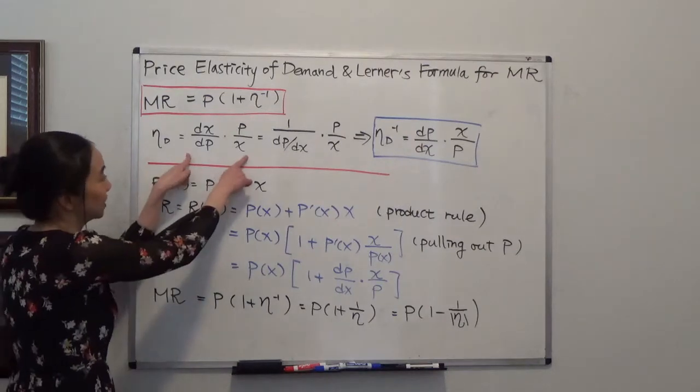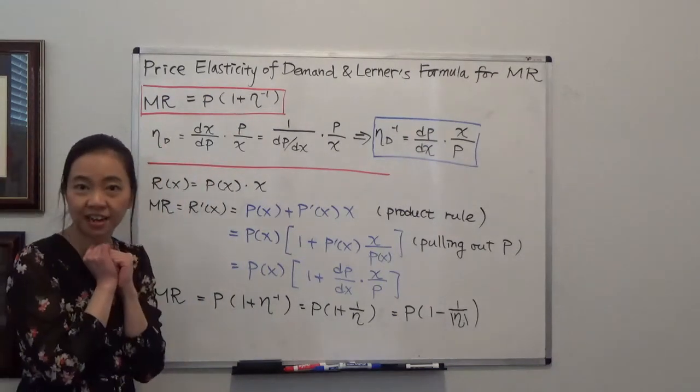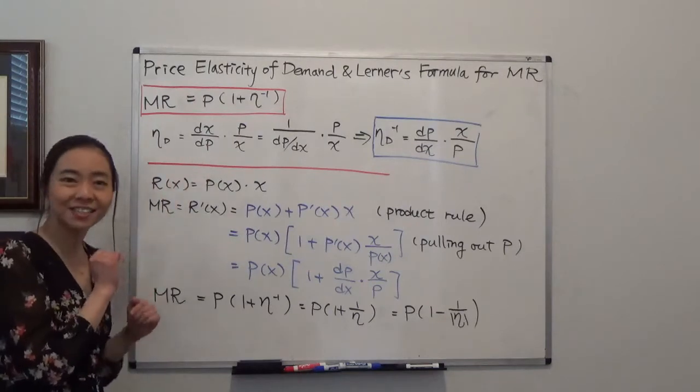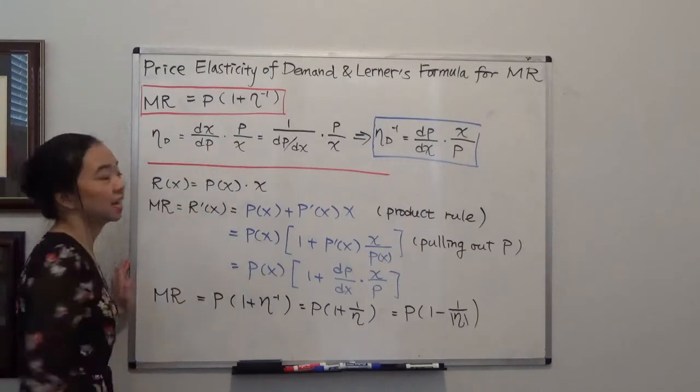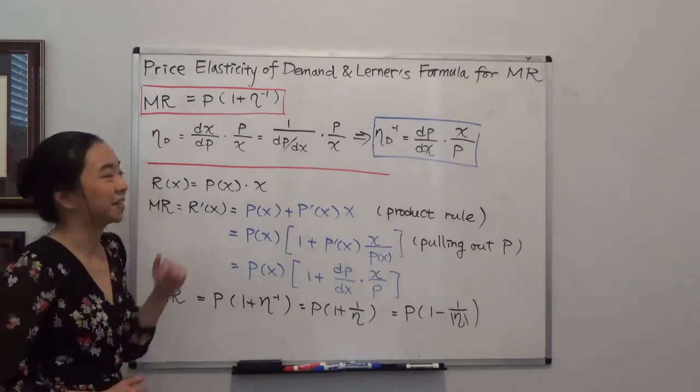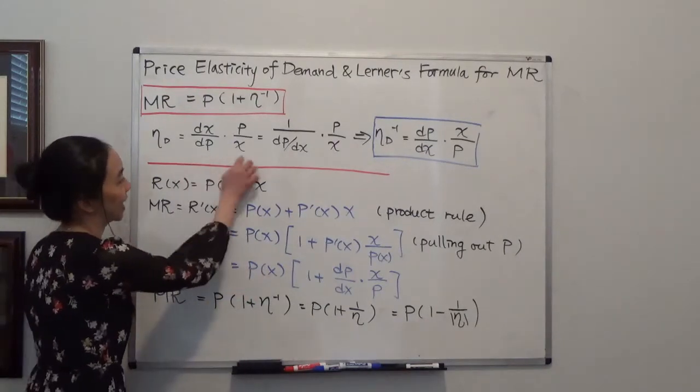And notice that here our price elasticity of demand is negative. The reason is that dx/dp is always negative by the law of demand. Now after we write it out,